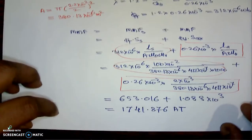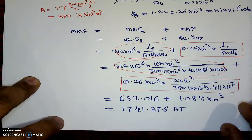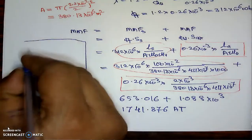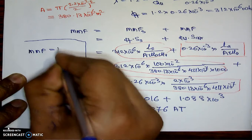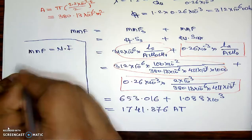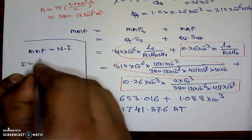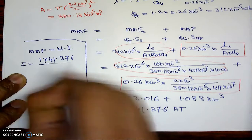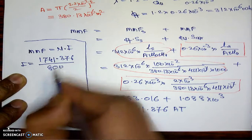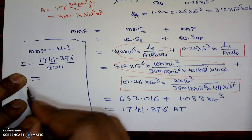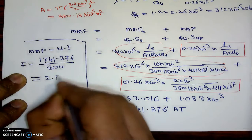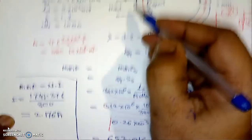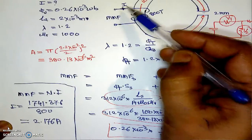Now that we know the MMF, we use the formula MMF = N × I to find the current. Therefore I = MMF / N = 1741.376 / 800 = 2.176 Amperes. This is the value of the current flowing in the circuit.